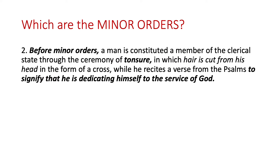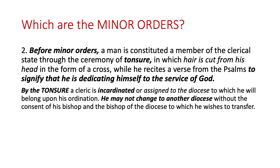Before minor orders, a man is constituted a member of the clerical state through the ceremony of tonsure, in which hair is cut from his head in the form of a cross while he recites a verse from the Psalms, to signify that he is dedicating himself to the service of God. By the tonsure, a cleric is incardinated, or assigned, to the diocese to which he will belong upon his ordination.